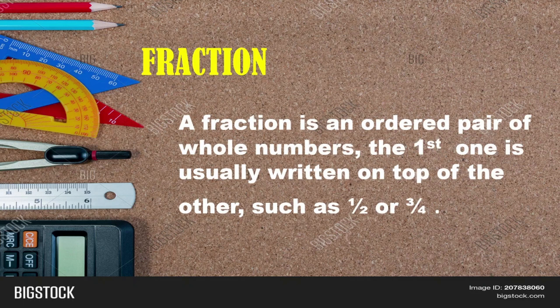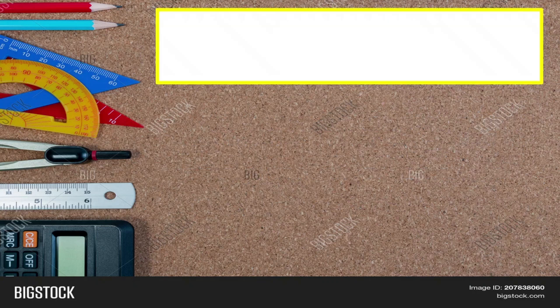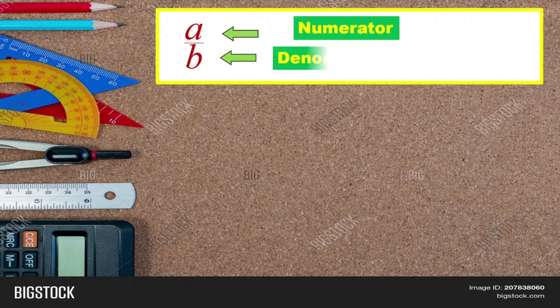So what is a fraction? A fraction is an ordered pair of whole numbers. The first one is usually written on top of the other, such as one-half or three-fourths. We have A over B — A is the numerator and B is the denominator. The number on top is the numerator and the number on the bottom is the denominator.